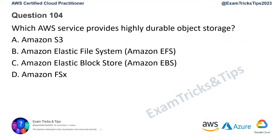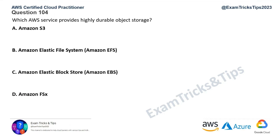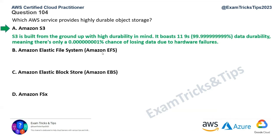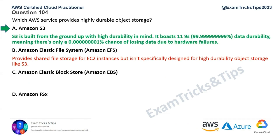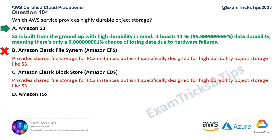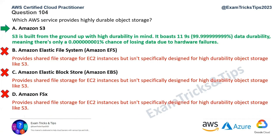Question number 104: Which AWS service provides highly durable object storage? The answer is Amazon S3. Amazon S3 is the most durable object storage, with 11 nines of durability — meaning there is only a minute chance of losing data due to hardware failures. EFS is durable but not as durable as S3. Elastic Block Store is specific to EC2 instances and is not designed for durable object storage. Amazon FSx is shared file storage for EC2 and also not designed for highly durable storage. The answer is option A, Amazon S3.